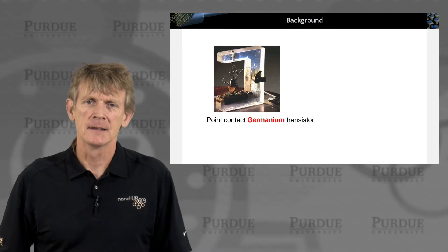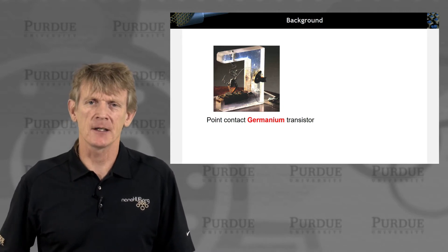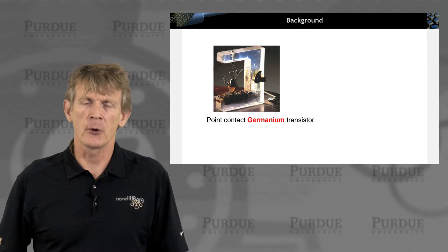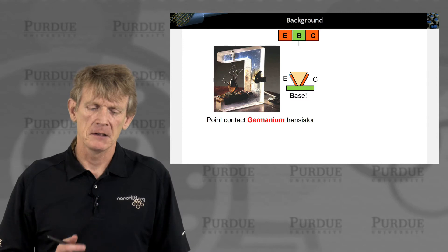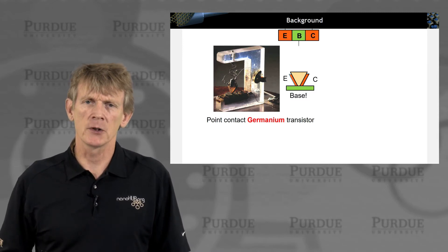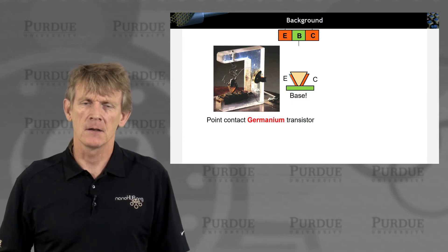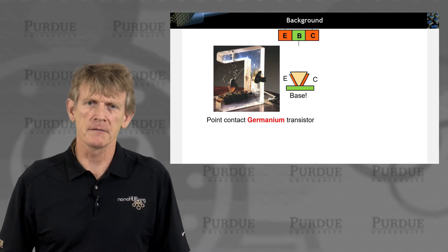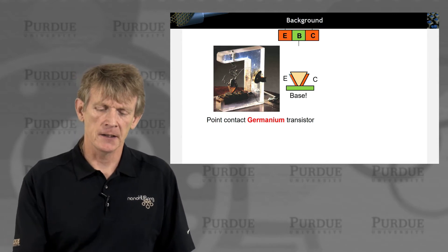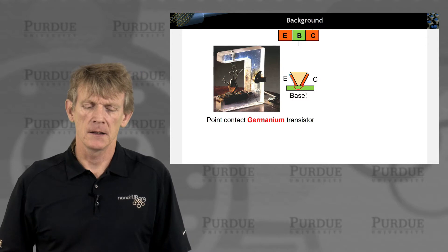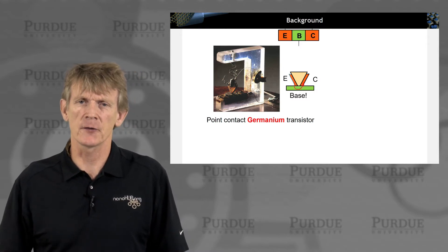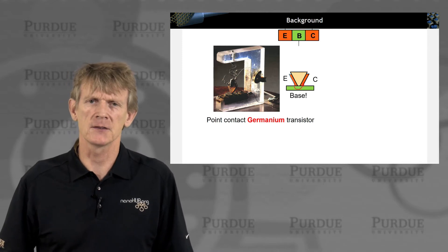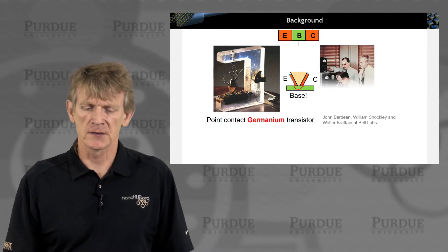Here is maybe the most famous transistor picture out there — it's a germanium point contact transistor, and it's a pretty interesting device. If you look at it in more detail, it's a bipolar device. It has an emitter, a base, and a collector. Interestingly, the emitter and collector are connected by a flat base like this. So this is very different from how we have planar devices today.